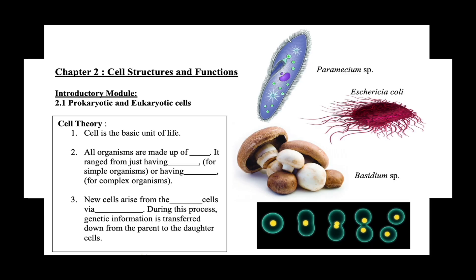Cell Theory. Cell is the basic unit of life. That means all organisms are made up of cells. It ranges from just having one cell for simple organisms like Paramecium and Escherichia coli here, or having more than one cell for complex organisms such as us and Basidium species or this cat mushroom.